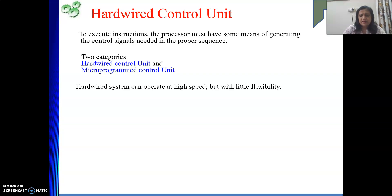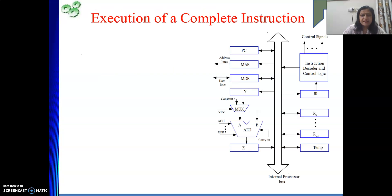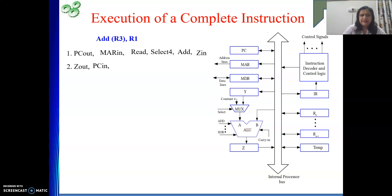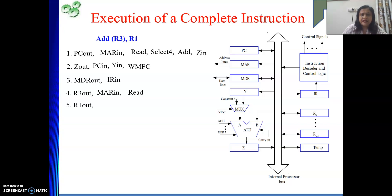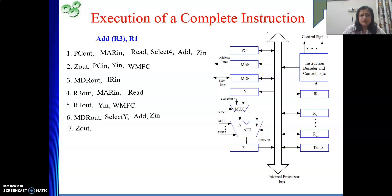The control unit will generate those signals. What we have seen in single bus CPU organization: suppose there is an instruction — to execute it, we require certain signals. Our aim is to generate these signals. But only generating these signals will not help; we need to generate them in a proper sequence.